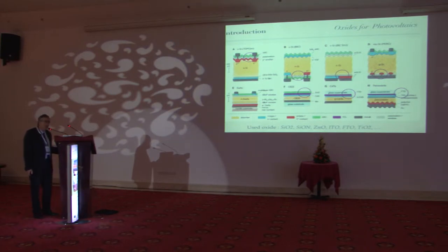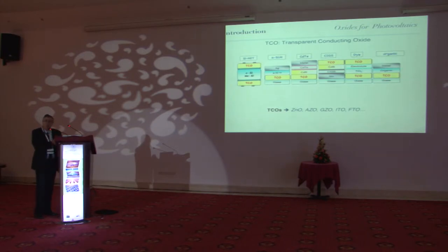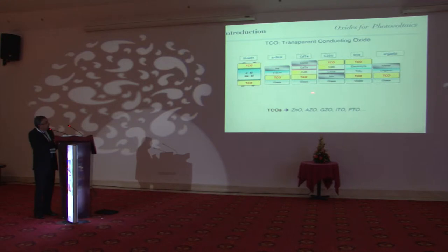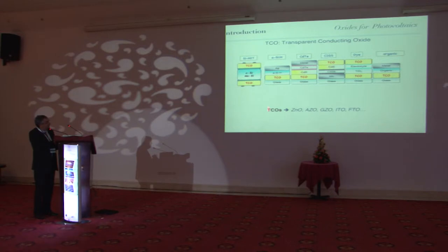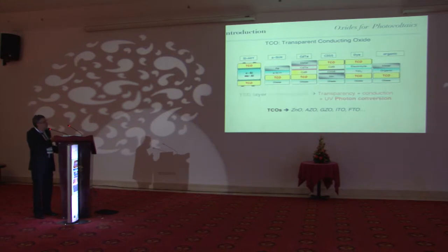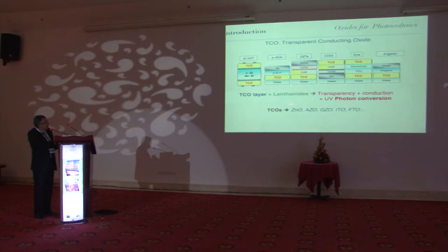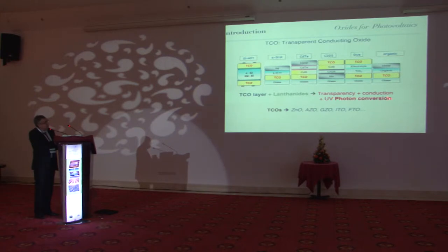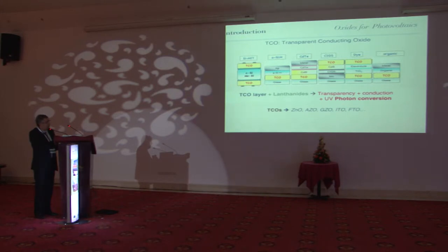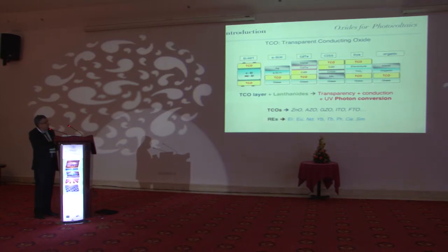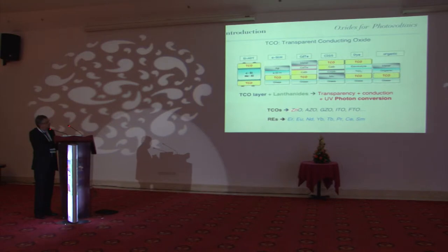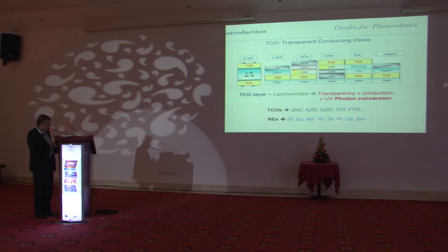Focusing now on TCOs: they can be found in several devices from silicon heterostructures to organics. What we are working on is to functionalize such TCOs by adding lanthanides, trying to keep the transparency and conduction while getting UV photon conversion in order to improve efficiency. There are plenty of rare earth materials that can help — going from erbium to samarium — though they are not all compatible with what we want to do.